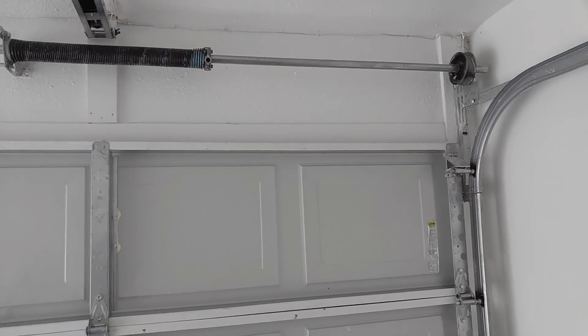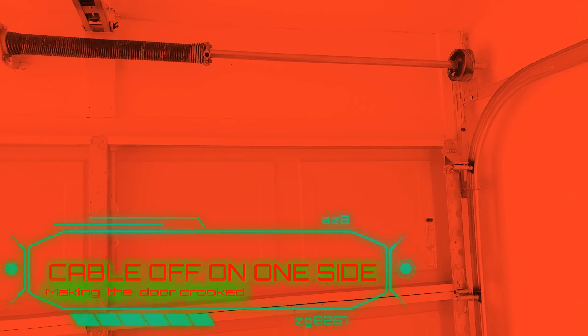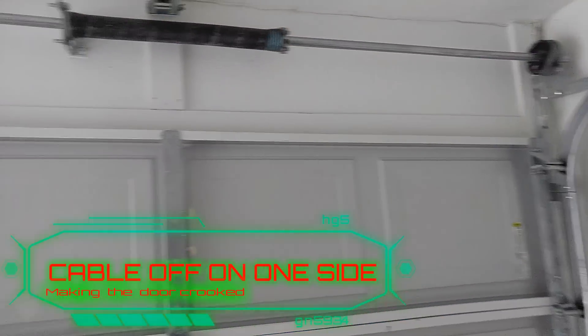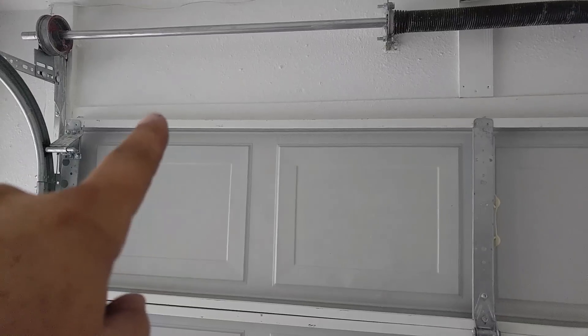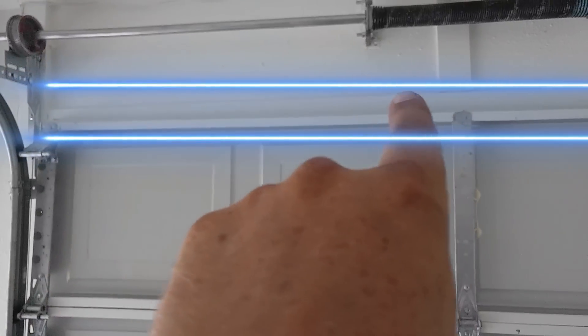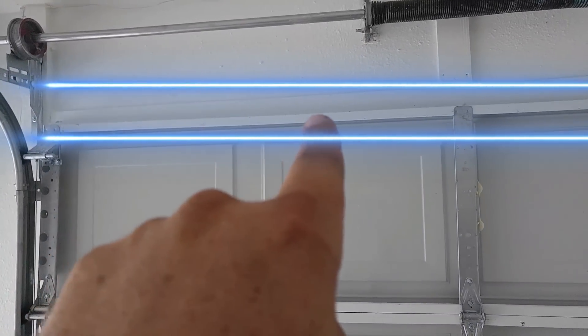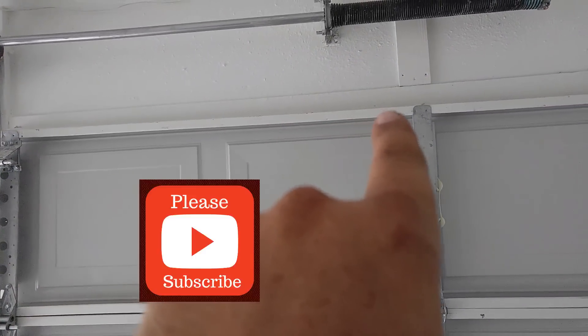Alright guys, today we have another cable off scenario. The door is a little bit crooked. I can kind of gauge it with the top board here, with the top portion of the door, and as I look down you can definitely see it's crooked.